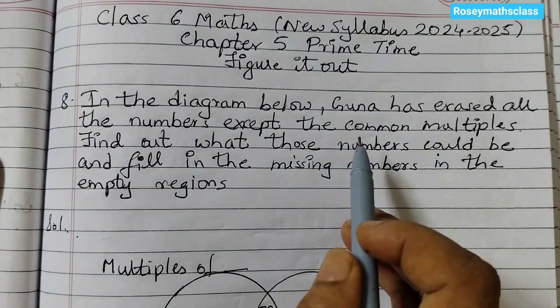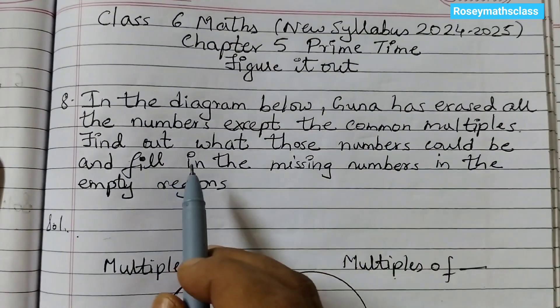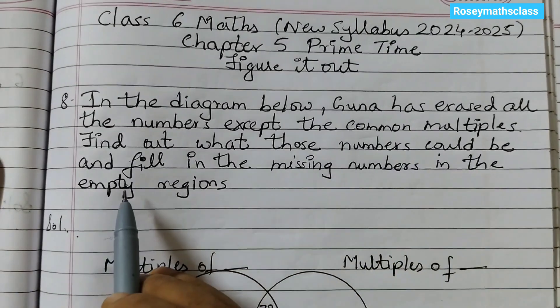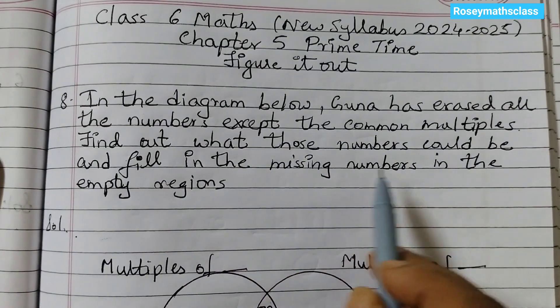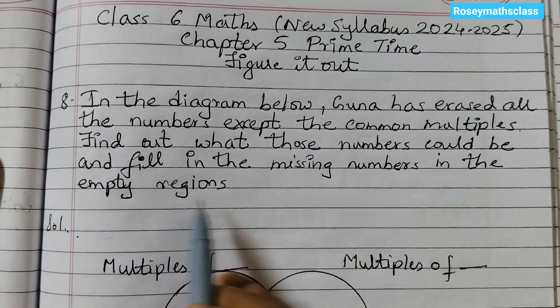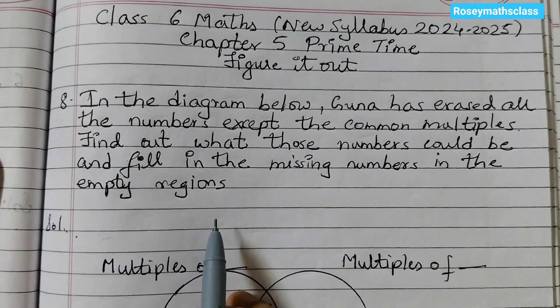In the diagram below, Guna has erased all the numbers except the common multiples. Find out what those numbers could be and fill in the missing numbers in the empty regions.